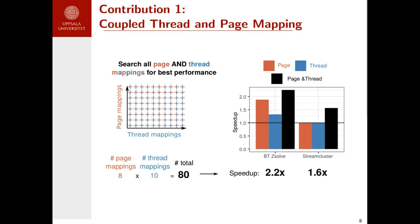First, we drastically increase the search space. Instead of considering 8 or 10 mappings, we now consider 80. But second, we drastically increase the performance gains that we can achieve.